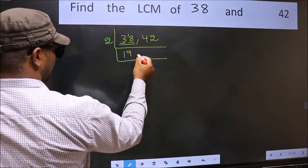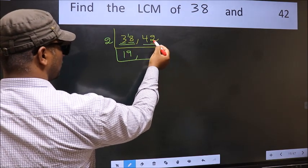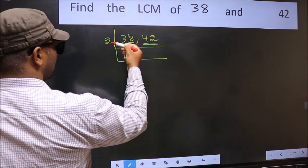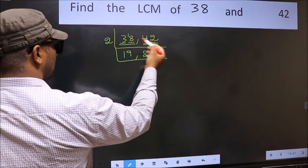2×9=18. The other number 42, last digit 2 is even, so this is divisible by 2. First number 4, when do we get 4 in the 2 table? 2×2=4. The other number 2, when do we get 2 in the 2 table? 2×1=2.